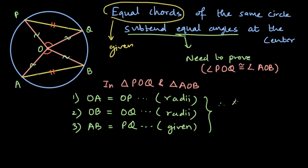And therefore, triangle POQ is congruent with triangle AOB. And since these two triangles are congruent, all the other corresponding elements of both triangles are going to be congruent. Therefore, this means all the corresponding angles are also congruent. And we can say that angle AOB is congruent with angle POQ.